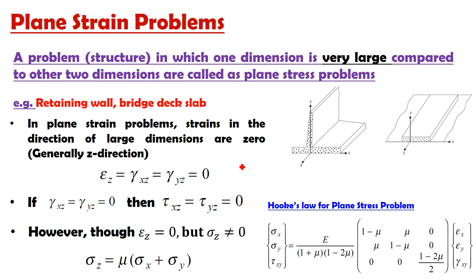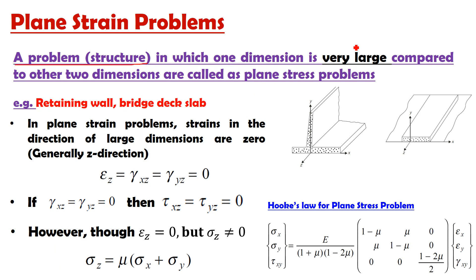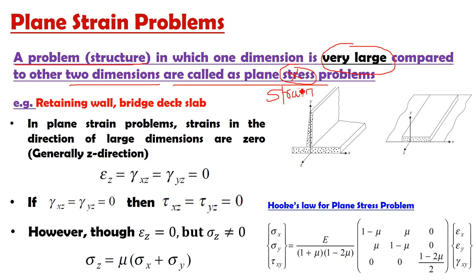The second problem is the plane strain problem. The definition of plane strain is exactly opposite to plane stress. A problem in which one dimension is very large — in plane stress it was very small, in plane strain it is very large — compared to other two dimensions is called a plane strain problem. Examples include retaining walls, deck slabs of bridges, cylinders, towers, and chimneys — structures where one dimension is very large compared to the other two.